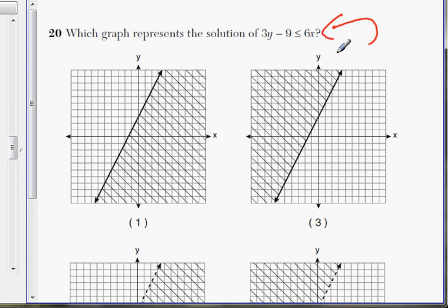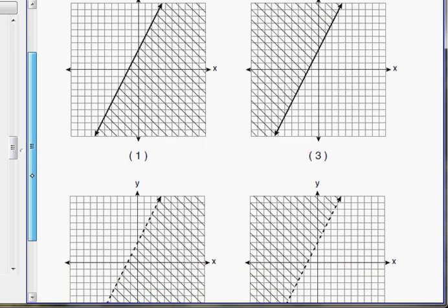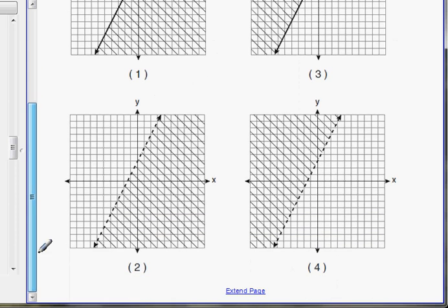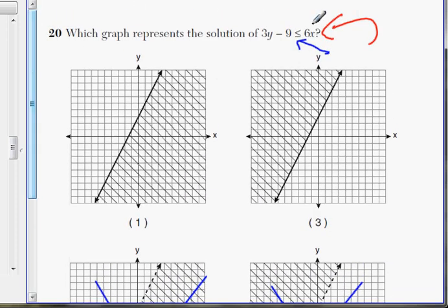For example, this equal sign underneath the less than sign, that equal sign at the bottom, what that tells me is going to be a solid line. If it doesn't have that equal sign, it's going to be a dotted line. So now these four choices, two of them are solid lines, which are one and three, and choice two and four are dotted lines. So right away, I can cancel these two out. That can't be the answer. It's down to choice one and three, just because of that characteristic.